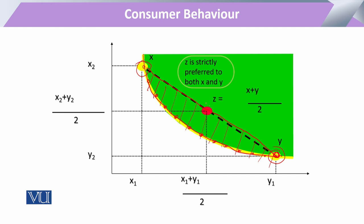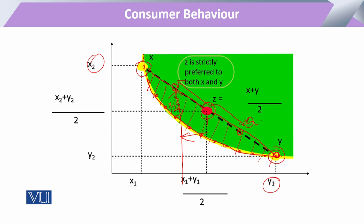At point Z, the consumer is having half of one bundle and half of the other. If he has to trade off and move to another point, he must sacrifice some amount of X1 to gain a corresponding amount of X2. If he moves further to point Q, the consumer again sacrifices an amount of X2 while gaining more of X1. This property of convexity maintains the proper properties of the indifference curve.